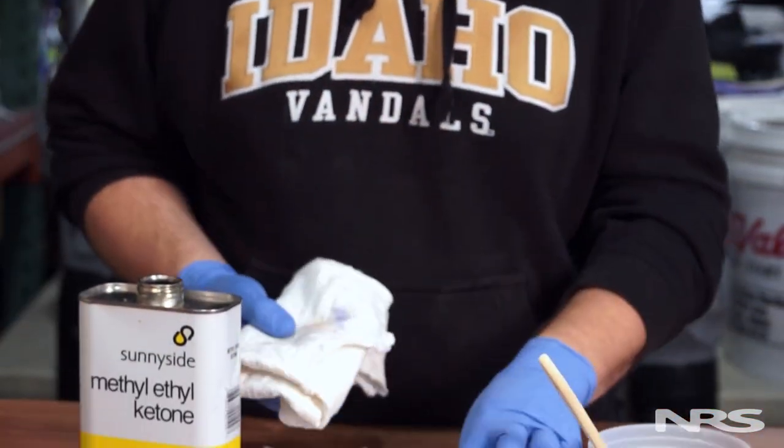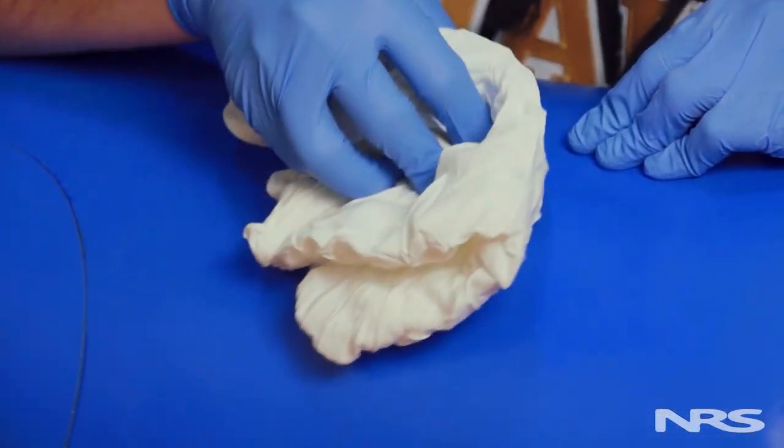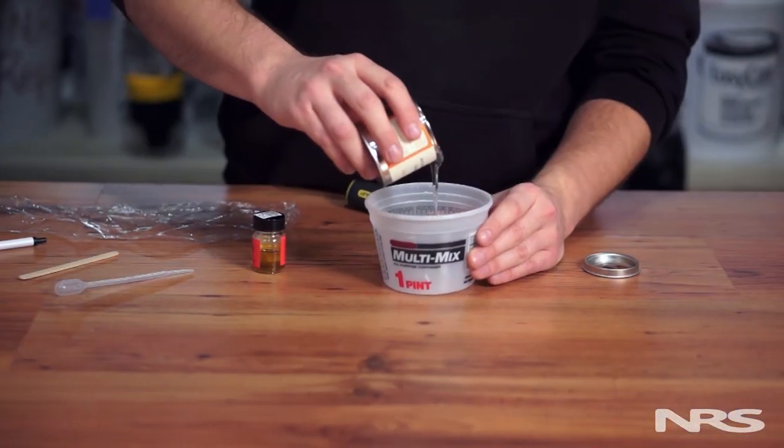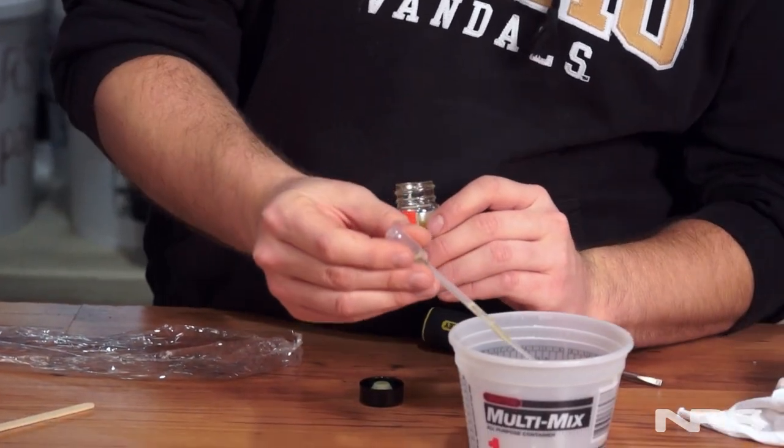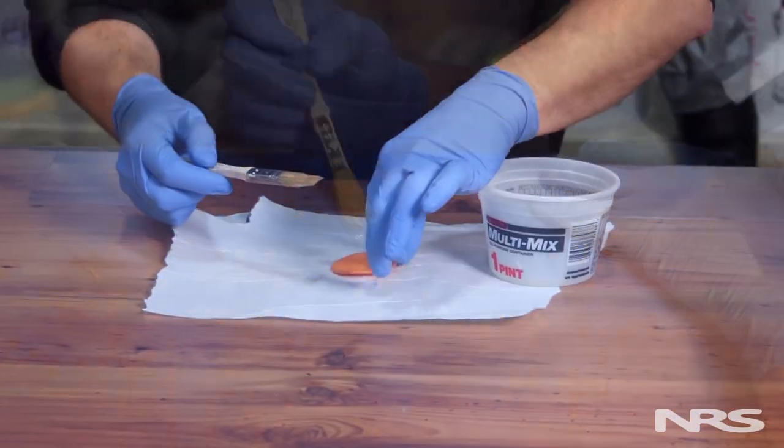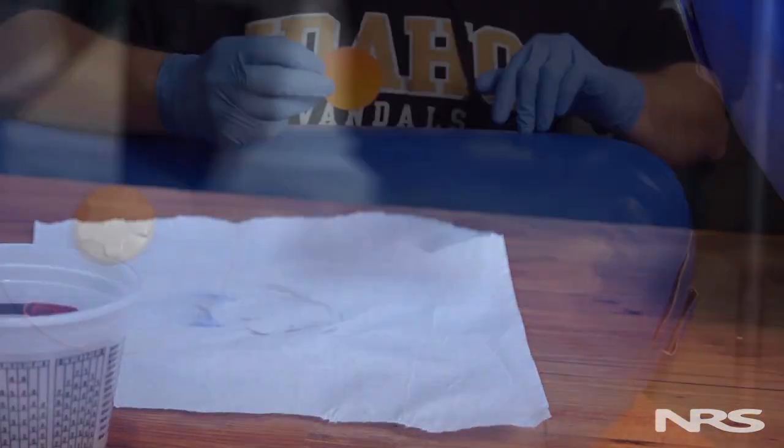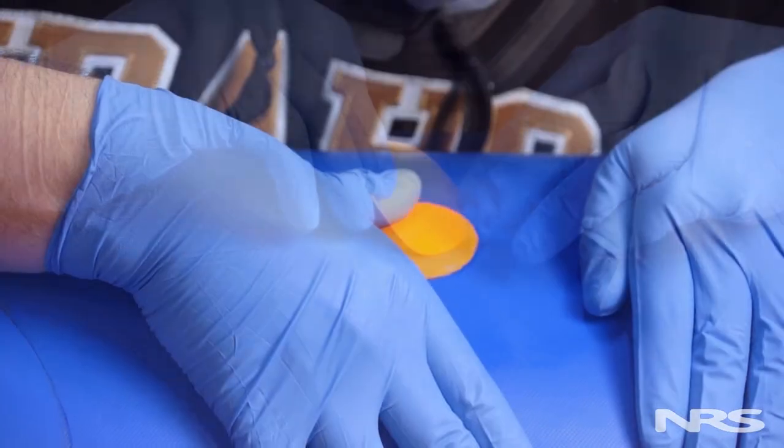As a general rule, when in doubt use alcohol. During the application stage, you'll want to apply three thin layers of glue, waiting five to ten minutes between each coat.